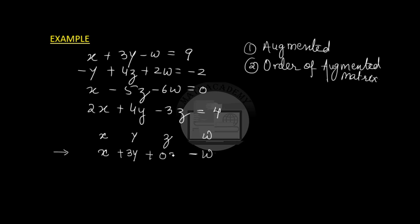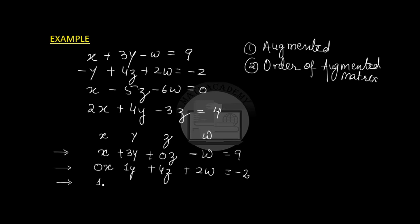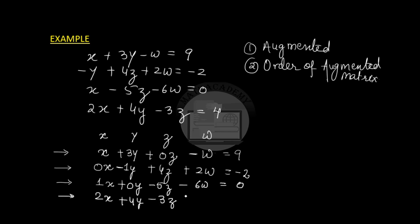Where a variable is missing, we write 0 times that variable. So the first equation becomes: x + 3y + 0z − w = 9. The second equation is missing x, so we write: 0x − y + 4z + 2w = −2. The third equation has x, is missing y: 1x + 0y − 5z − 6w = 0. The fourth equation has 2x + 4y − 3z, and w is missing, so we write: 2x + 4y − 3z + 0w = 4.